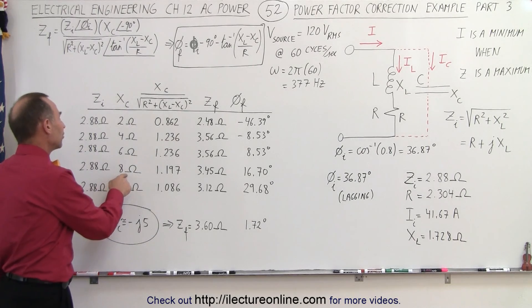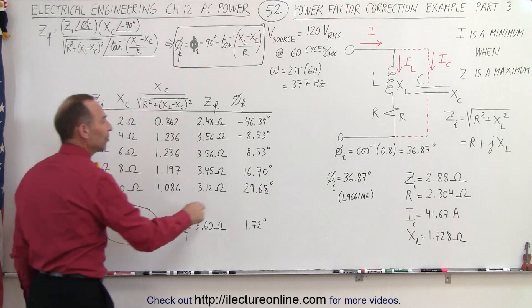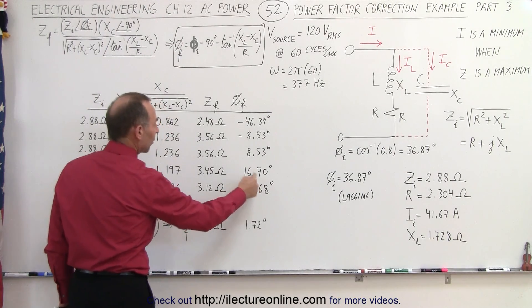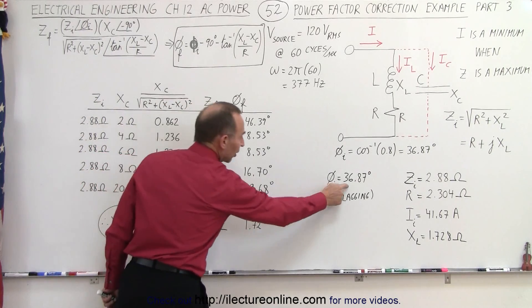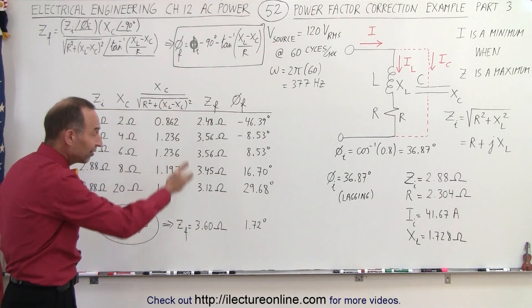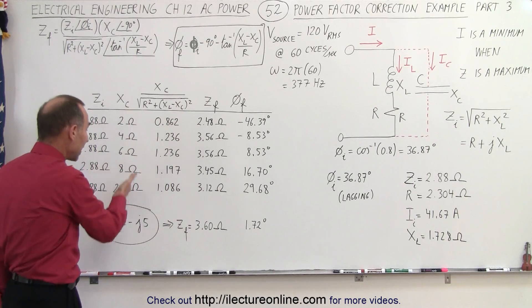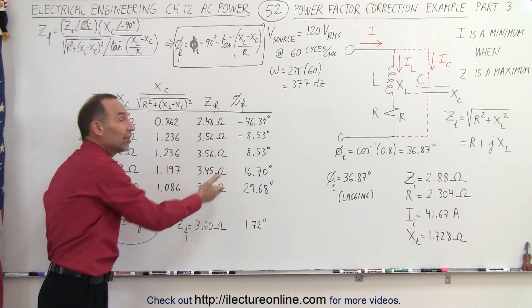Then if we continue to increase the capacitor reactance, you can see that now the phase angle begins to grow again. At 20 ohms of capacitor reactance, we're almost back to where we started, so it's definitely not where we want to go. So again, you can see how by changing the capacitor reactance, you're going to get different phase angles.